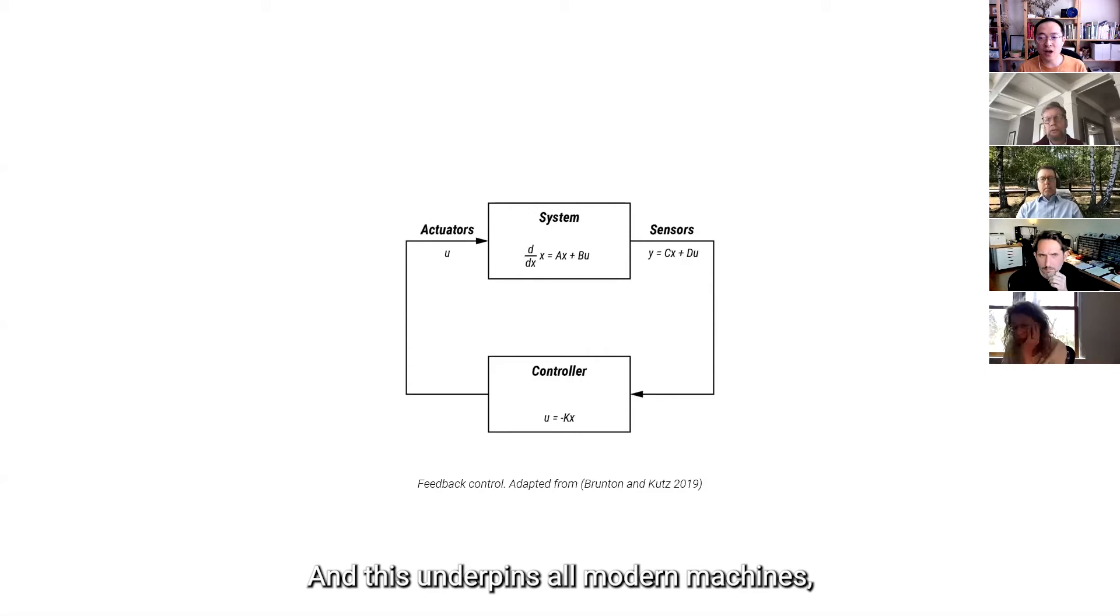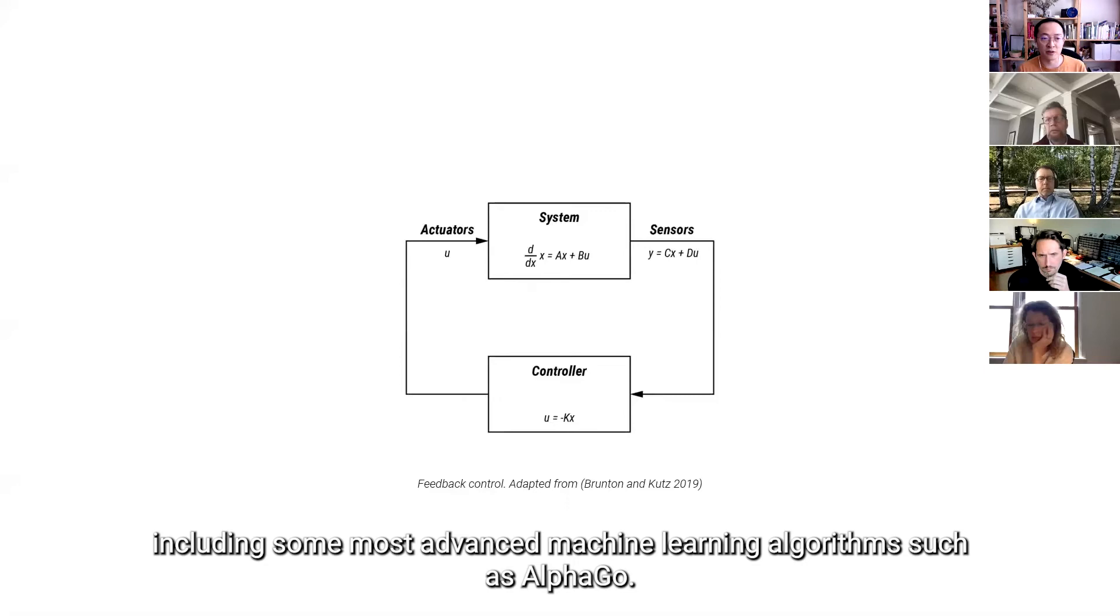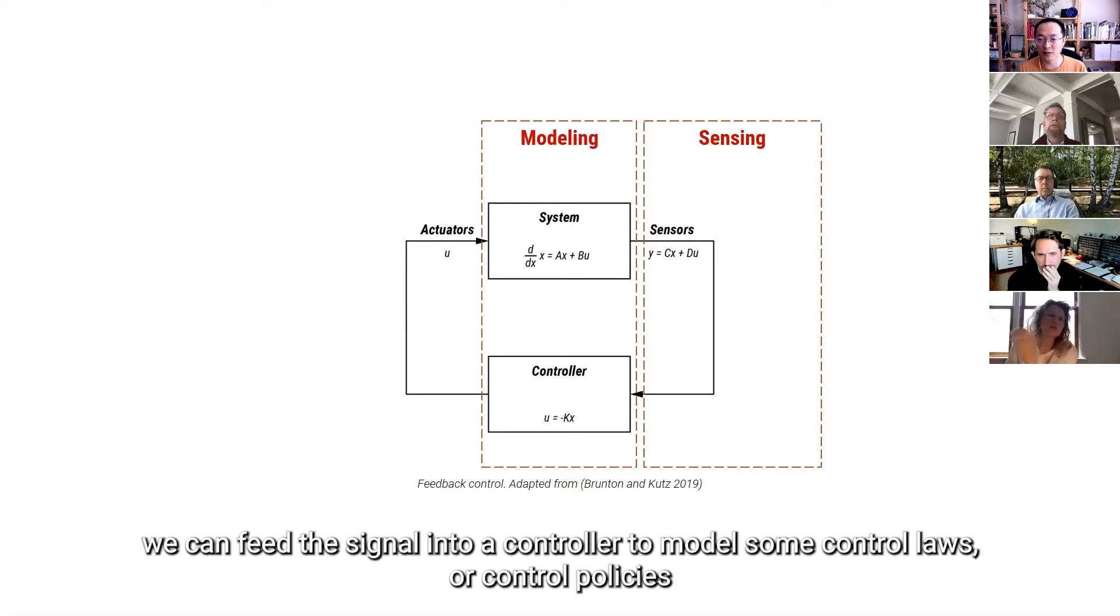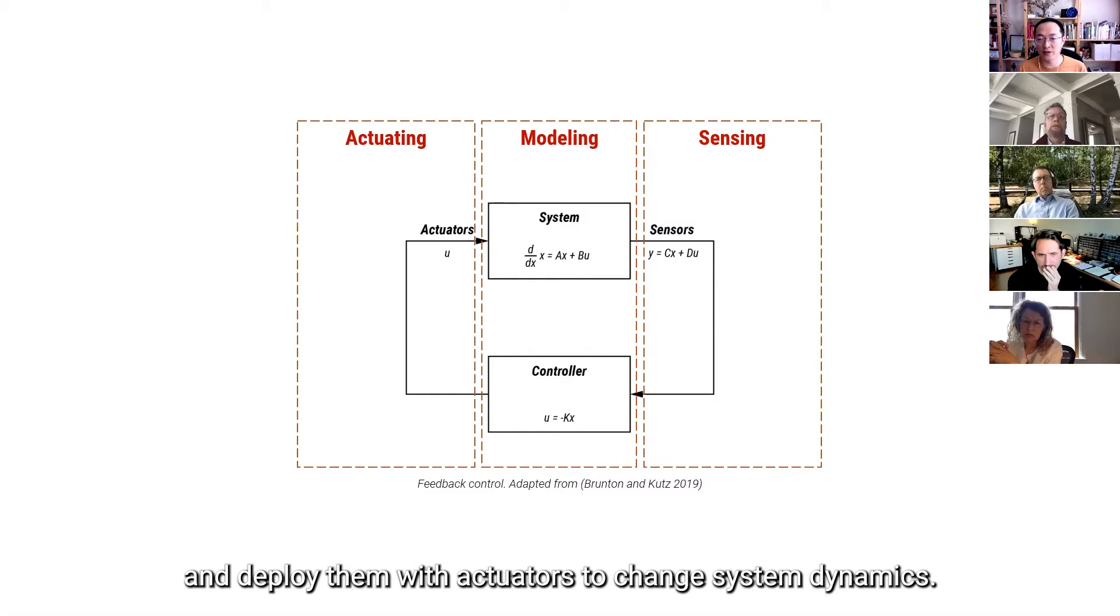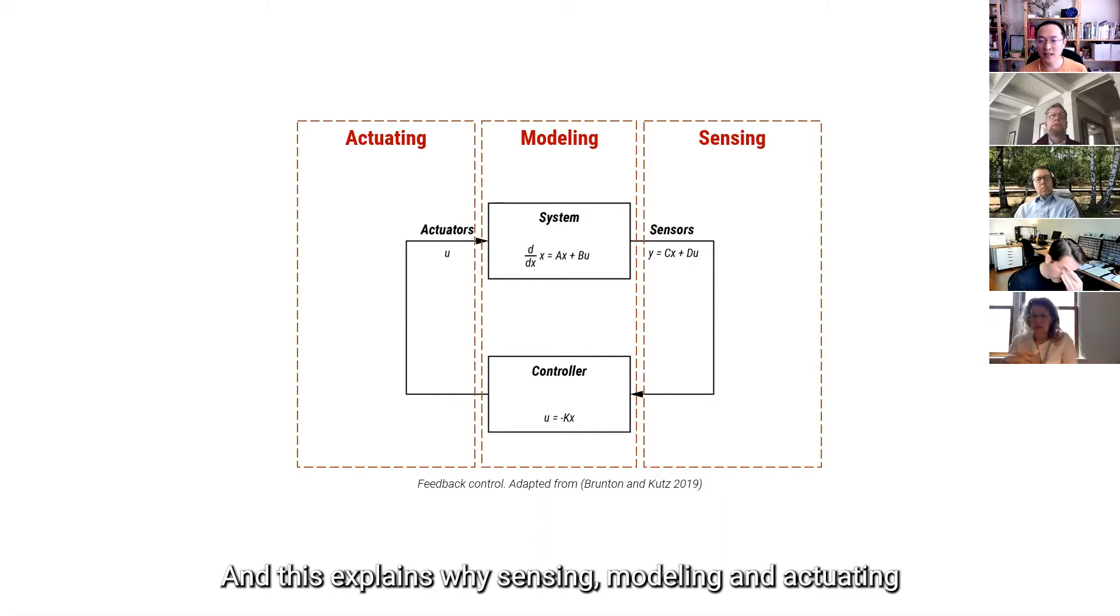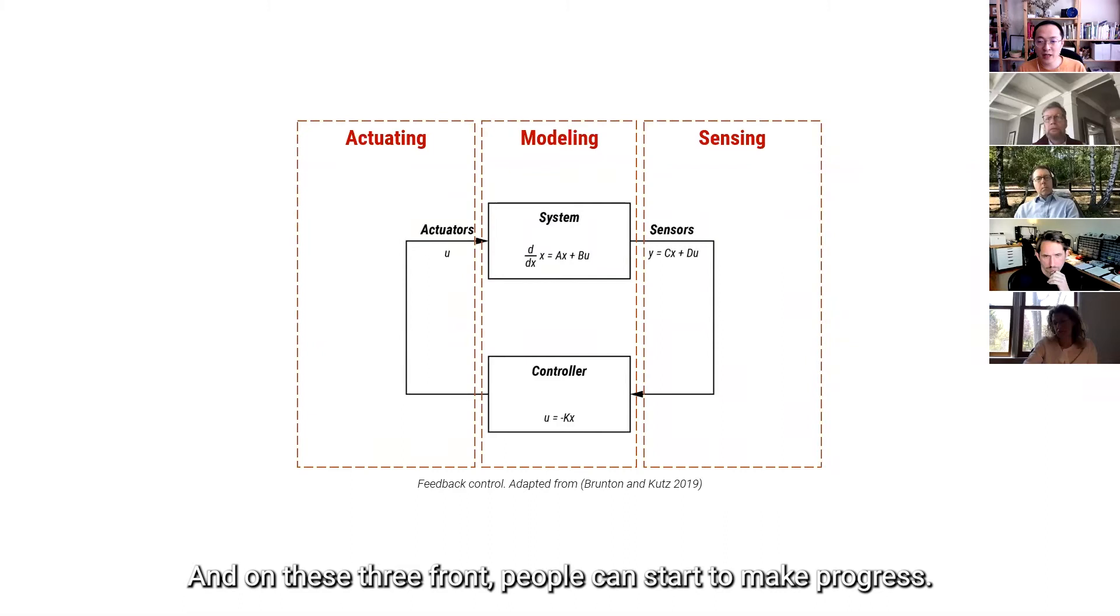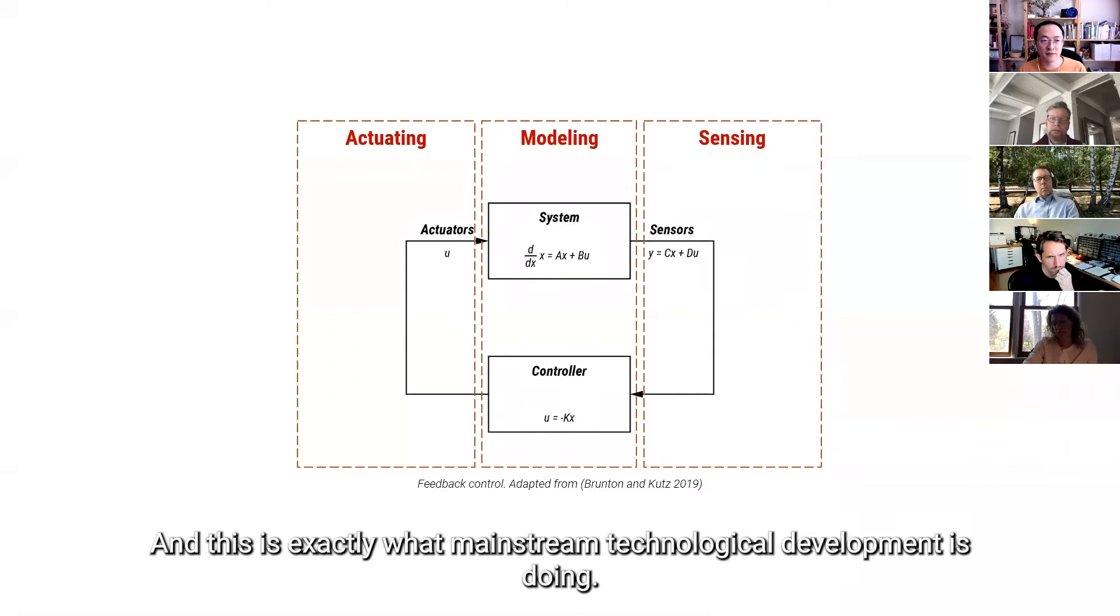So, and then this idea actually underpins all modern machines, including some most advanced machine learning algorithms today, such as AlphaGo. And all modern machines are cybernetic machines. And by measuring the output with sensors, we can feed the signal into a controller, which we can model some control laws or control policies and deploy them with actuators to change system dynamics. And this also explains why sensing, modeling, and actuating are regarded as the three fundamental processes to conceptualize feedback mechanism. And on these three different fronts, people can start to make progress. And this is exactly what mainstream technological development is doing.